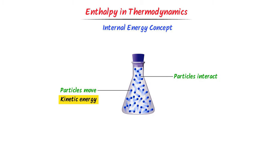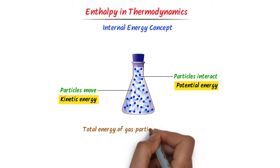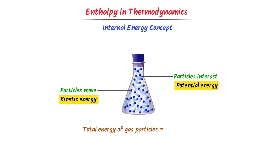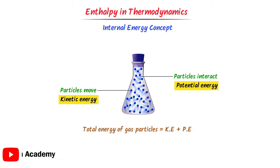These gas particles also interact with each other. We know that when particles interact, they possess potential energy. Hence, these gas particles also possess potential energy. Now, what is the total energy of these gas particles? The answer is simple — the total energy is kinetic energy plus potential energy.